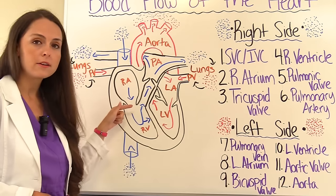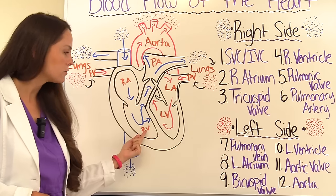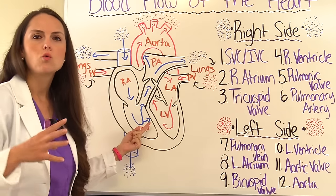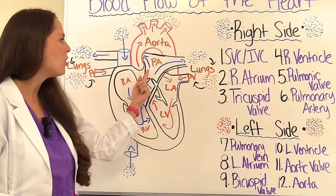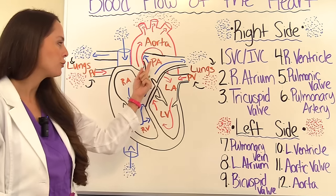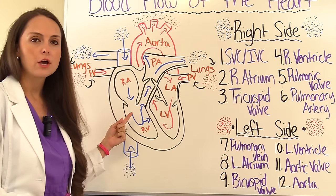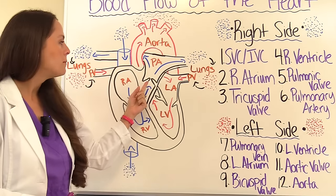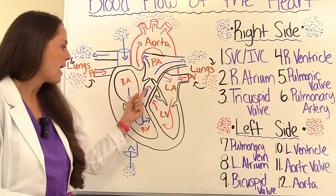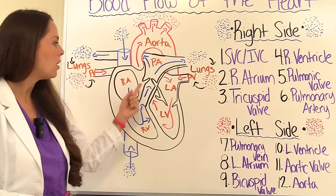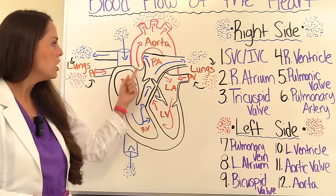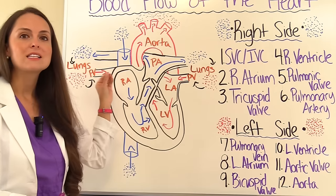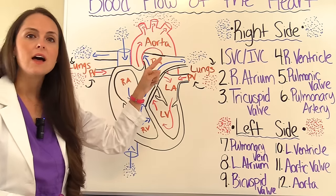So the blood goes down through the tricuspid valve, then down through the right ventricle. The right ventricle squeezes it up through the pulmonary artery, but the blood has to go through another valve first — it's called the pulmonic valve. So it goes from right ventricle, through the pulmonic valve, to the pulmonary artery, which takes it right to the lungs.